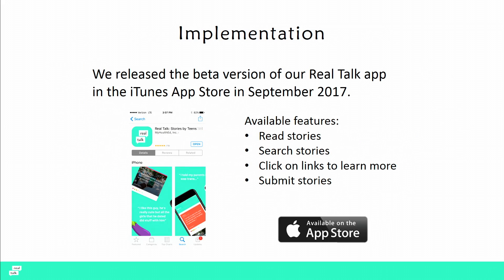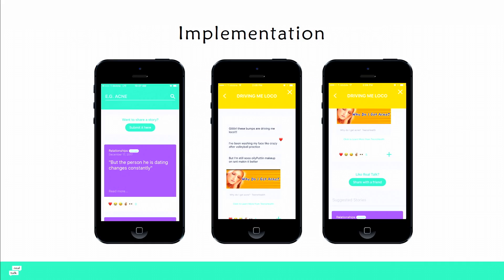We released a beta version of our app in September 2017 with features to read stories, search stories, click on links to learn more, and submit stories. In the screenshots, on the left it shows the story tiles — much like Instagram, users are used to browsing. They browse story tiles, click on one, and it renders as a chat conversation. At the bottom, there's a button where they can click on a link to learn more, and within the app they're directed to that high-quality online resource.